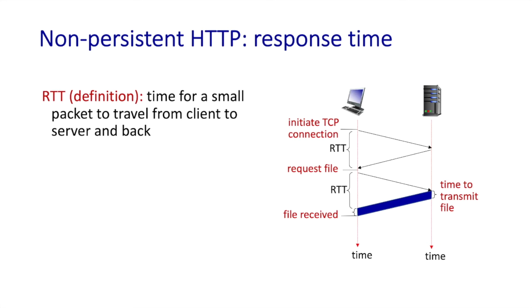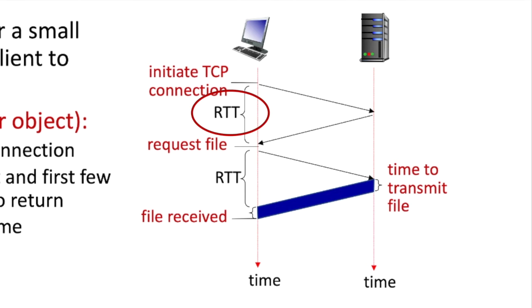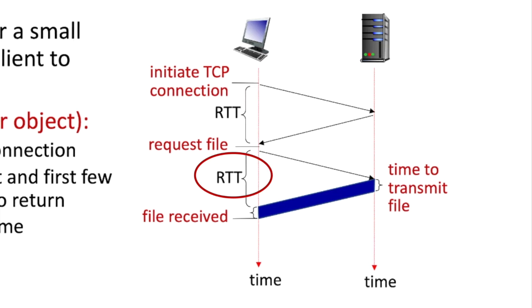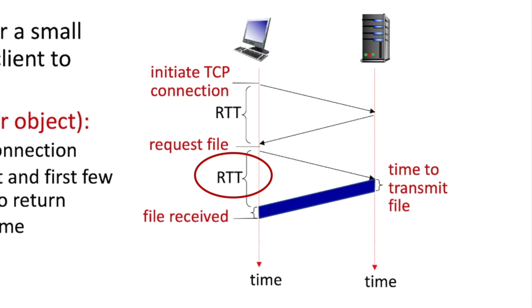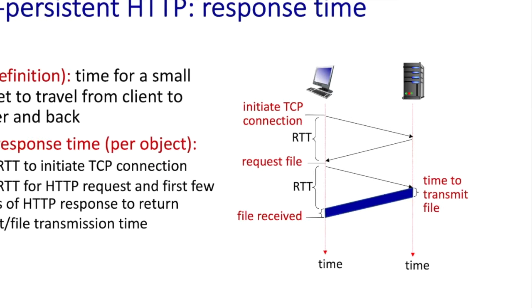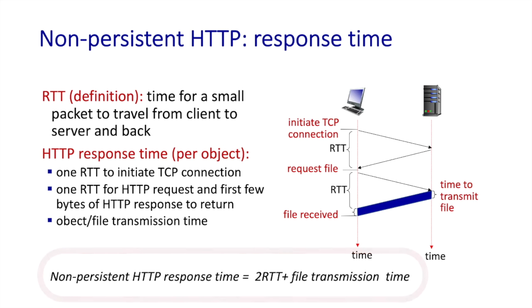Now we can look at the response time for non-persistent HTTP — defined as the time from when a user first enters a URL until the base HTML file is received and displayed. We define the RTT (round-trip time) as the time needed for a small packet to travel from client to server and back. The non-persistent HTTP response time per object has these components: one RTT to initiate the TCP connection, another RTT for the HTTP request to be sent and for the first bytes of the HTTP response to be returned, plus the file transmission time. Overall, that's two RTTs plus file transmission time.